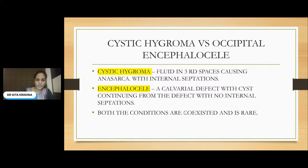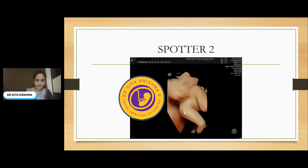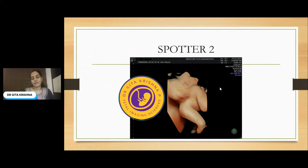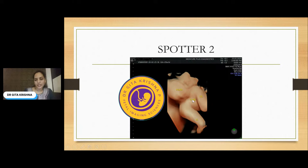We'll go to the next slide, spotter 2. This is the most interesting case that I've gone through in my entire career. This is the 3D image — the fetus is very cooperative with a good amount of amniotic fluid, so I was able to take good images. The head of the fetus is seen fused to the thorax. What is this condition called?